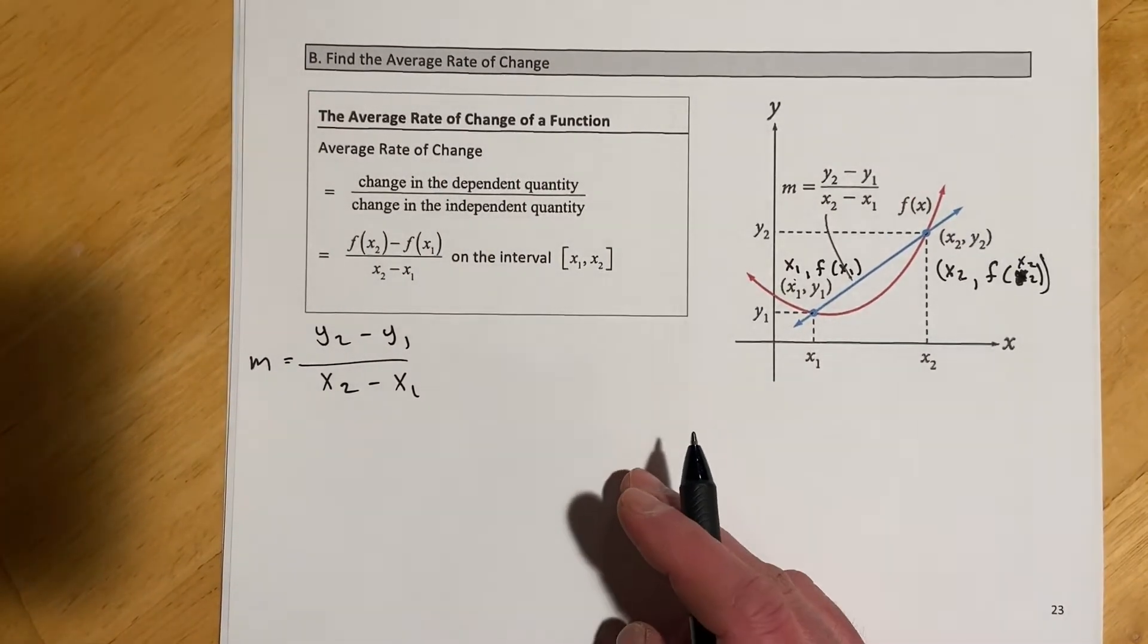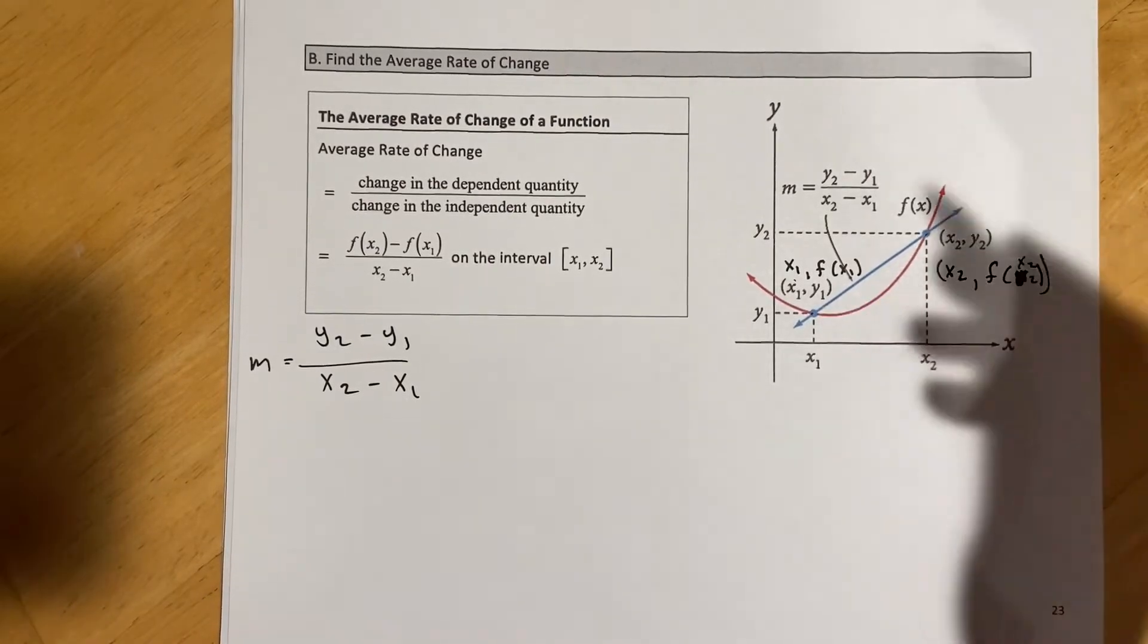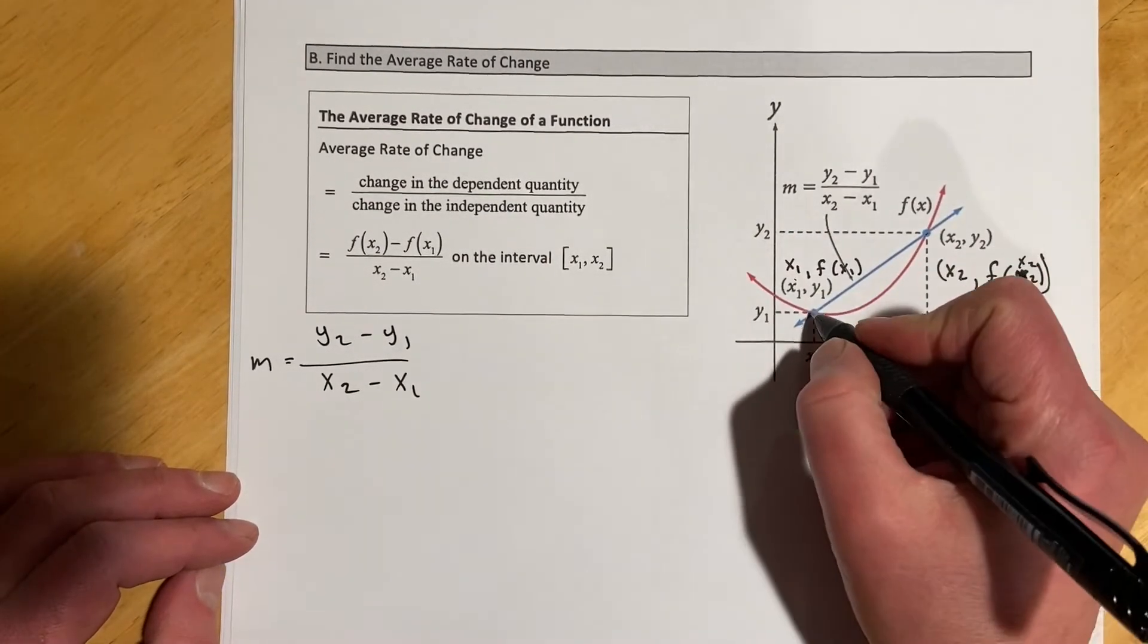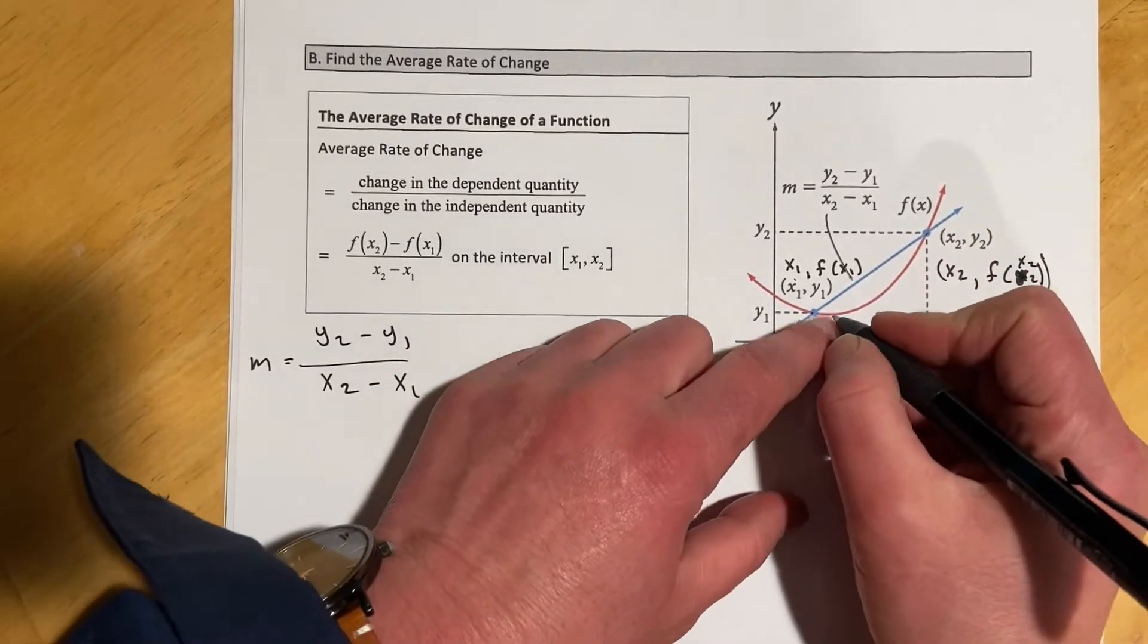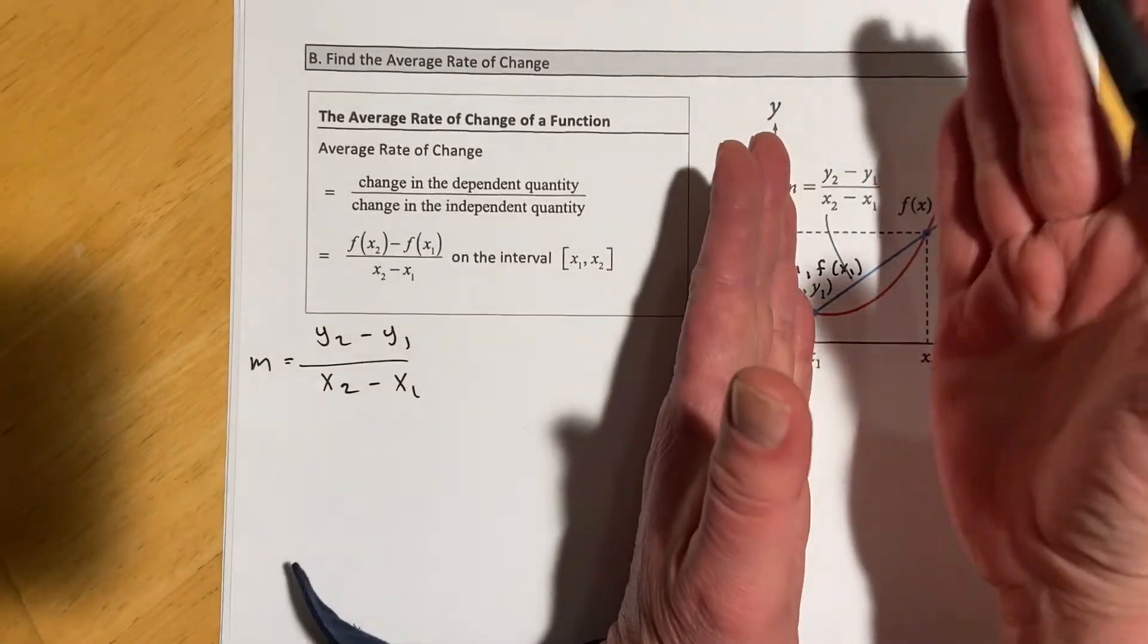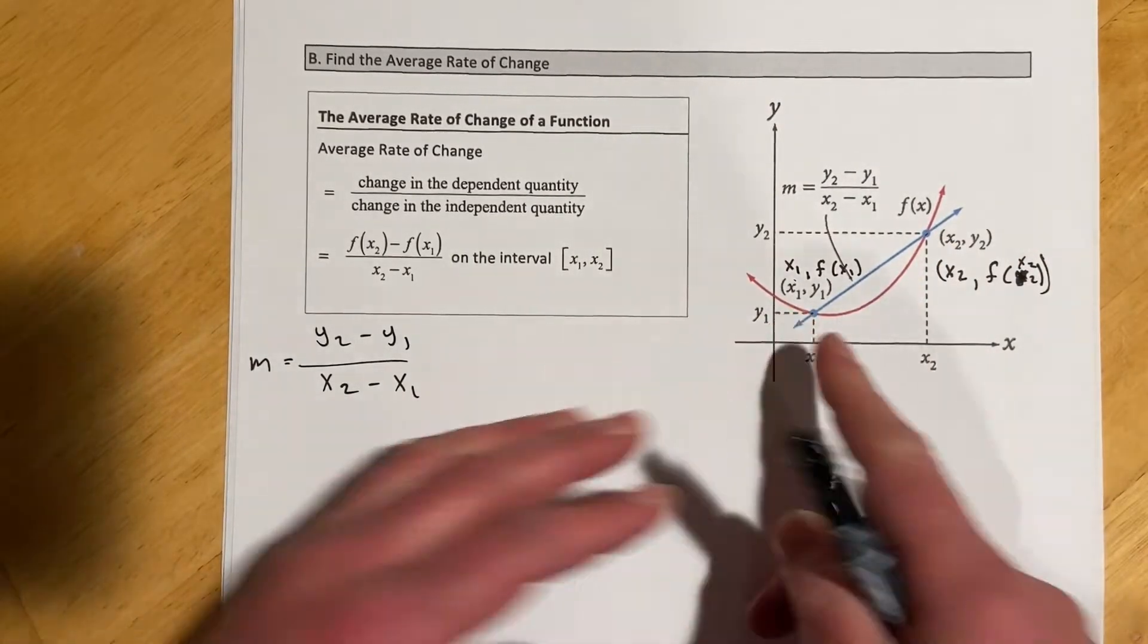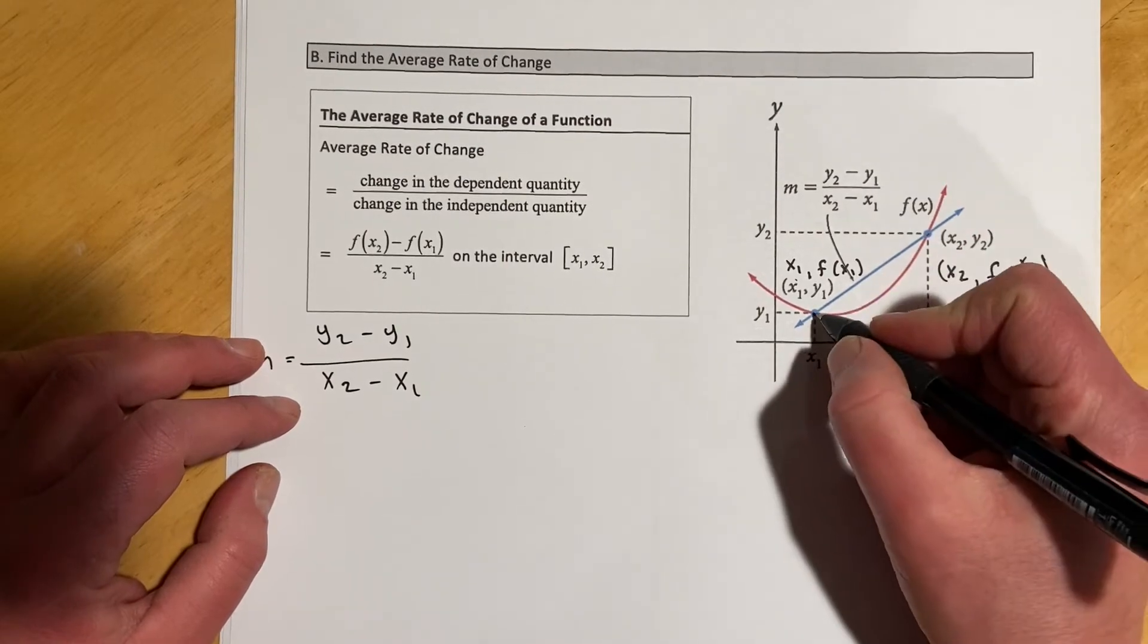The average rate of change - when we have a curved function like this, the average rate of change for a linear function is just the slope. But when we have a curved function, the average rate of change is actually changing, or the rate of change is changing at every single point. So if we're talking about the average rate of change, we're picking two points and saying on average how did it change between there.